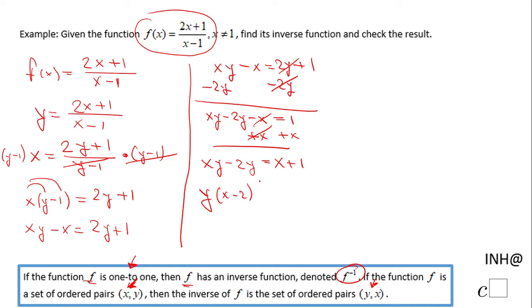Then we have y times the quantity x minus 2 equals x plus 1. The next thing to solve for y is divide by x minus 2.